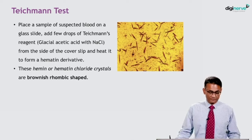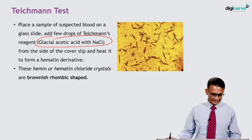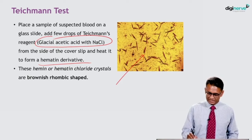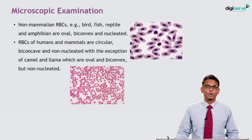For the Teichmann test, place a sample of suspected blood on a glass slide, add a few drops of Teichmann reagent — which is glacial acetic acid with NaCl — from the side of the cover slip, and heat to form a hematin derivative. These hemin or hematin chloride crystals are brownish rhombic in shape — you can see the brownish rhombic shaped crystals in the image. This is a positive Teichmann test.